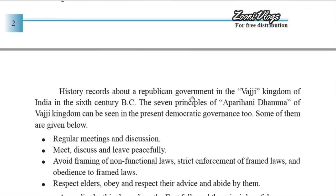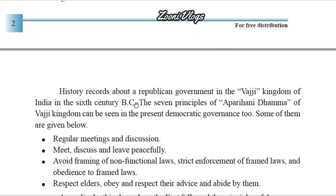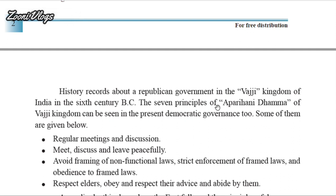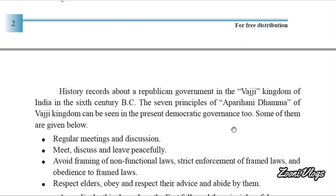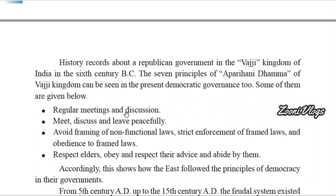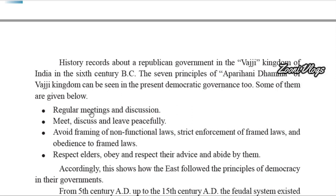There are also historical records about a republican government in the Vaji kingdom of India in the sixth century. We see the seven principles of Sapta Aparihani Dharma in the Vaji kingdom in India in the sixth century. These principles of Aparihani Dharma of the Vaji kingdom can be seen in present democratic governance too.